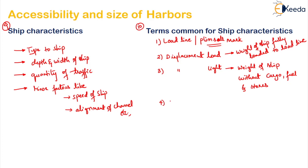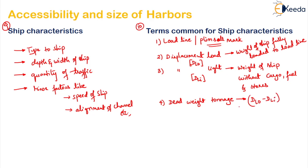The fourth term is dead weight tonnage. It is the difference between the displacement load (DLO) and the displacement light (DLI). Dead weight tonnage varies with latitude and season and represents the carrying capacity of the ship. It is expressed as tropical, summer, and winter dead weight.